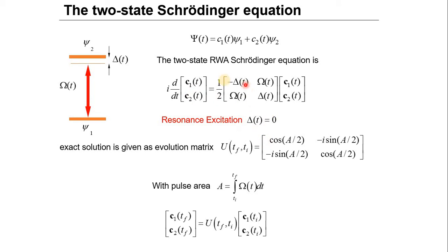The solutions for these differential equations are easily solved. It's a linear system of two differential equations and it's given as an evolution matrix — the propagator. The propagator consists of elements: cosine and minus i sine of the so-called pulse area, which is the integral of the Rabi frequency over time. The evolution matrix connects the initial states with the final states, so if we know the initial states and the evolution matrix, we can find the final states.